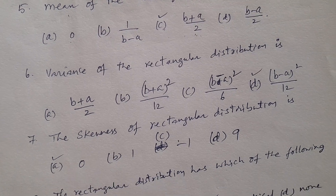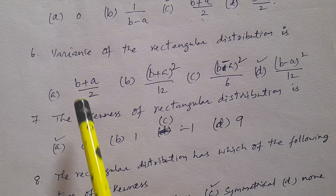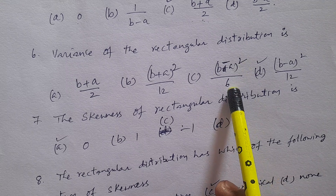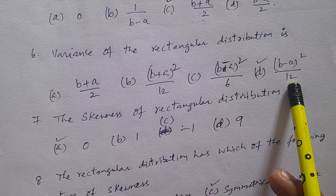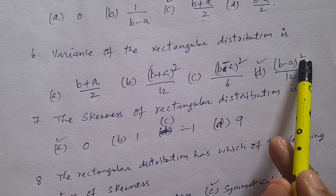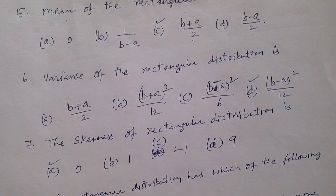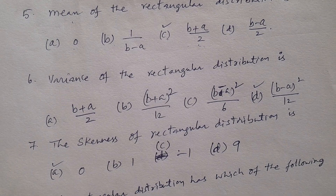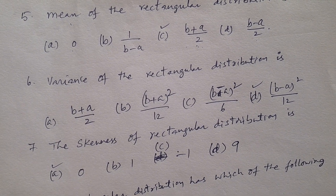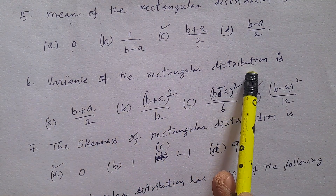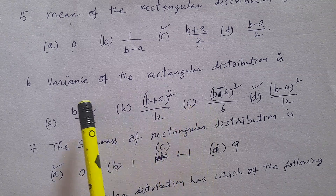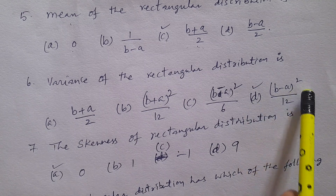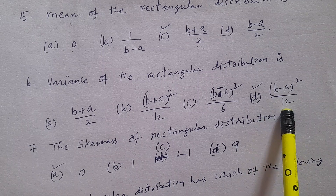Question number 6: The variance of rectangular distribution — options: A. (b+a)/2, B. (b+a)²/12, C. (b-a)²/12, D. (b-a)²/12. The answer is option D: (b-a)²/12. Mean is (b+a)/2 and variance is (b-a)²/12.